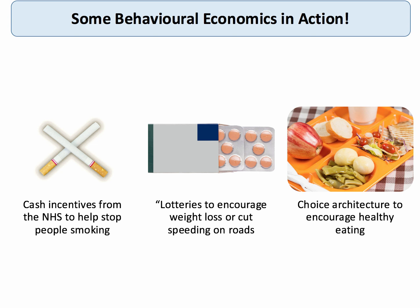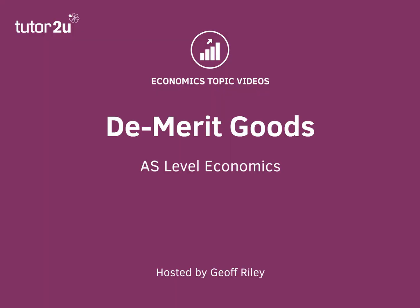Other behavioral interventions include 'chunking' — giving people pills in different colors to encourage them to finish their course of treatment — and designing school canteens so that the architecture of where food is placed encourages healthy eating. To summarize, demerit goods are a potential cause of market failure. However, with demerit goods there is always a value judgment involved in what we're talking about, and that's worth mentioning in every exam answer.